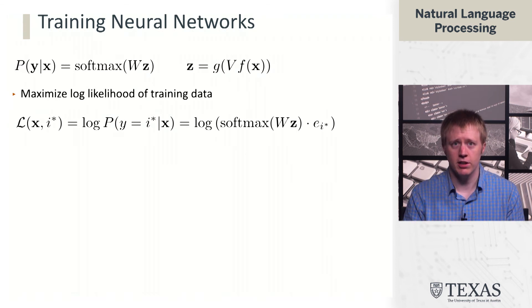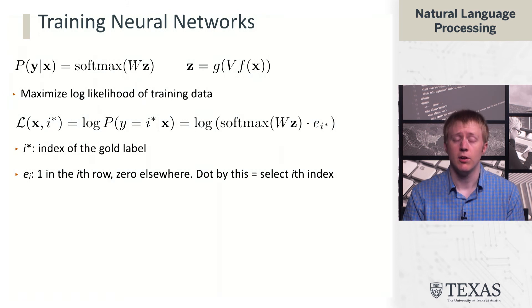The log likelihood of a training example can be written in this way. I star on the right denotes the index of the gold label. So for example, in a three-class problem, if the gold label is at position two, you call this E2. E is basically just a selector that has a one in the position of the subscript and zero elsewhere. The log probability of the true class is gotten by grabbing the log probabilities of everything and then taking this dot product and logging it.